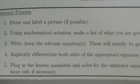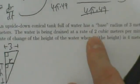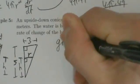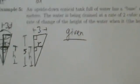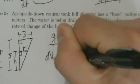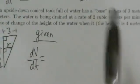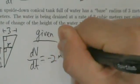That's step one: draw and label a picture. Step two: using mathematical notation, make a list of what you're given and what you want to know. We're given that the water is being drained at a rate of two cubic meters per minute. Cubic meters per minute is a rate of change of volume, so letting V be the volume: dV/dt equals negative two cubic meters per minute. It's negative because the water is being drained out of this conical tank.